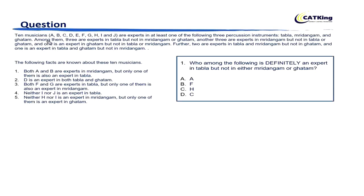Here the question says: 10 musicians A, B, C, D, E, F, G, H, I and J are experts in at least one of the following three percussion instruments — Tabla, Mridangam and Ghatam. Among them, three are experts in Tabla but not in Mridangam or Ghatam. Another three are experts in Mridangam but not in Tabla or Ghatam. And one is an expert in Ghatam but not in Tabla or Mridangam.